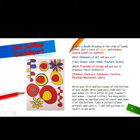You will write your first and last name at the bottom of your doodle. Write your class code next to your name — five, plus the first letter of your teacher's name, capital letter. You may write your name on another piece of paper and place it at the bottom. Take a picture of your artwork and save it. I will tell you how to send it to me later.